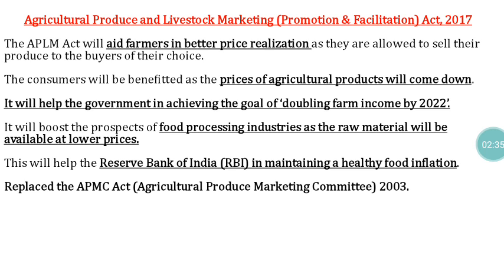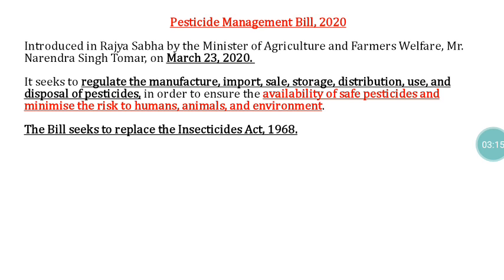The government of India can more easily achieve the goal of doubling farmers' income by 2022. This act will also boost agro-processing industry to get raw materials at lower prices, so the final product price will also come down. Additionally, this act will help the Reserve Bank of India in maintaining healthy food inflation.